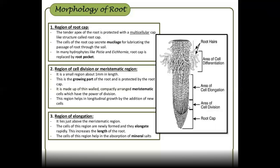Next is the root channel, followed by the region of elongation. Below that is the meristematic region, where small cells help form the root channel. This is the root length — cells elongate here to increase root length.